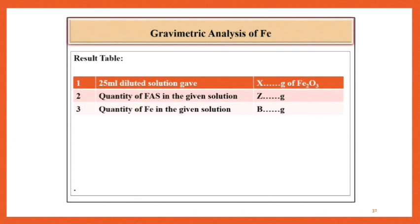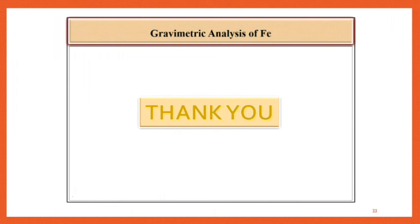Result table: 25 ml diluted solution gave X gram of Fe2O3, quantity of FAS in the given solution Z gram, and quantity of Fe in the given solution B gram. Students, thank you for watching this video. Please subscribe and like the video.